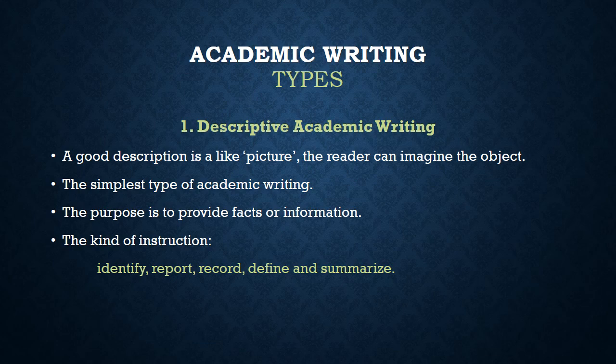Descriptive academic writing is called the simplest type of academic writing, and its purpose is to provide facts and information. The kinds of instructions for a purely descriptive assignment include: identify, report, record, summarize, and define. For example, you need to report results of an experiment — that is descriptive academic writing.